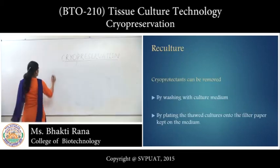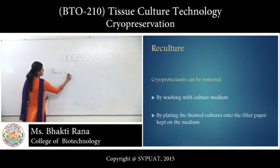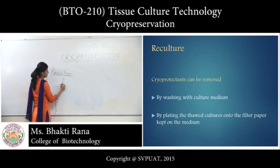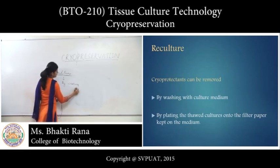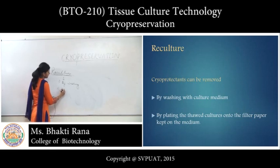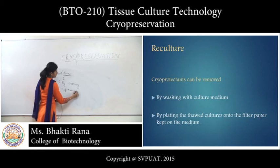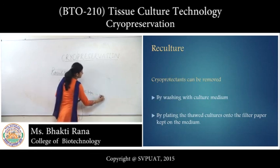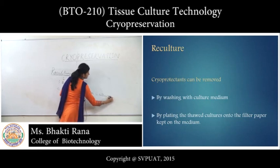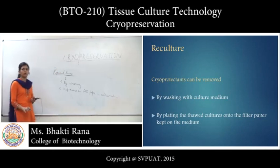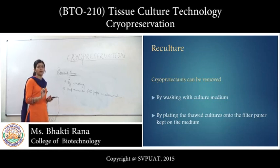When you have thawed the material, you will get the culture and you have to re-culture it. You can re-culture by washing the tissues and placing them on filter paper in culture medium. Cryopreservation is a very important technique for the preservation of tissues, cells, and germplasm, so that it can be used for further production of different seeds or different plants.